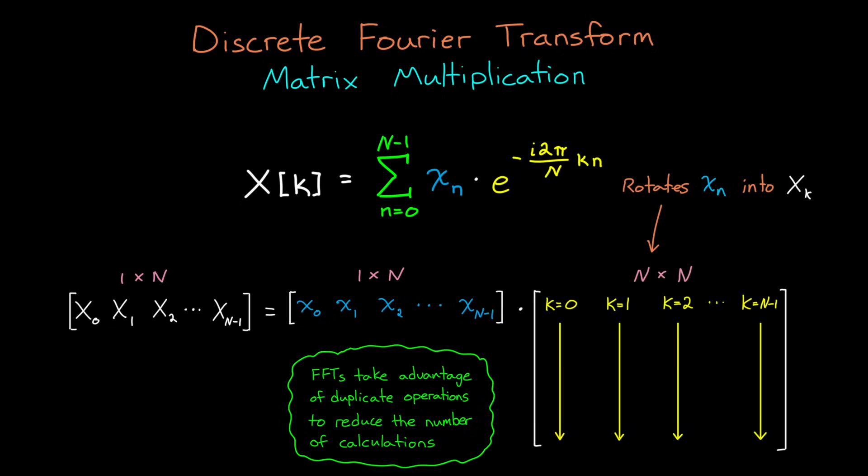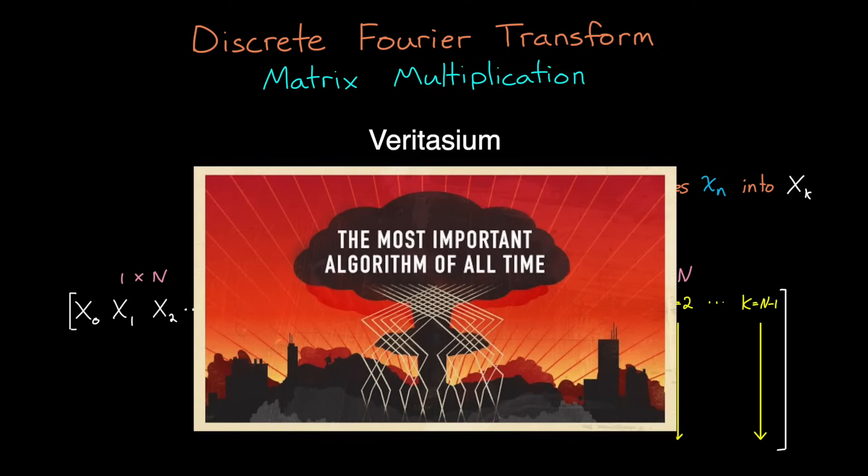And FFT algorithms take advantage of duplicate operations to reduce the number of overall calculations. So they produce the exact same result as the DFT, just in a more efficient way. And for a good explanation of the FFT algorithm and how these computational efficiencies actually made the DFT a viable option for science and engineering, check out Veritasium's excellent video on the topic. Link is in the description below.